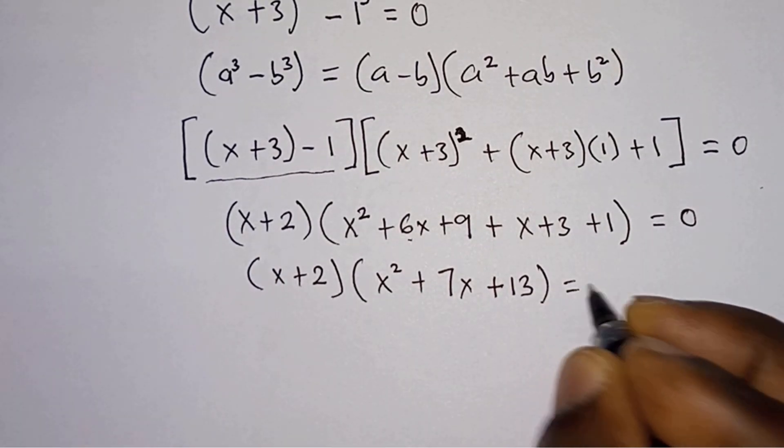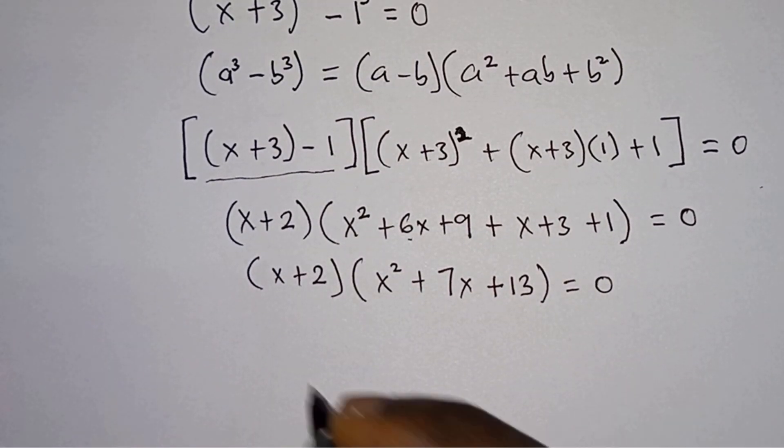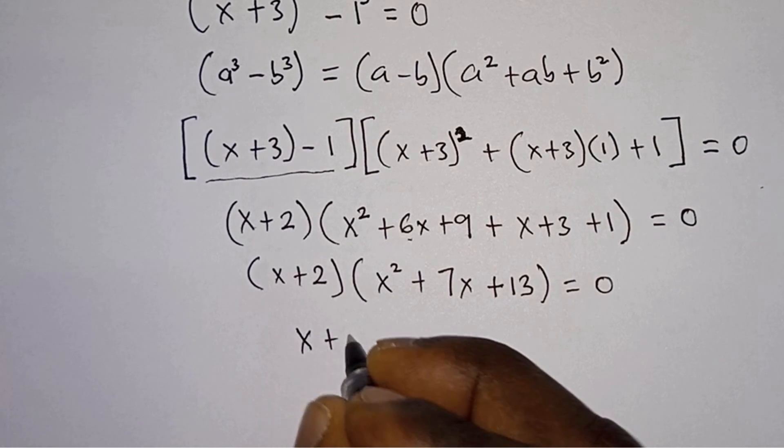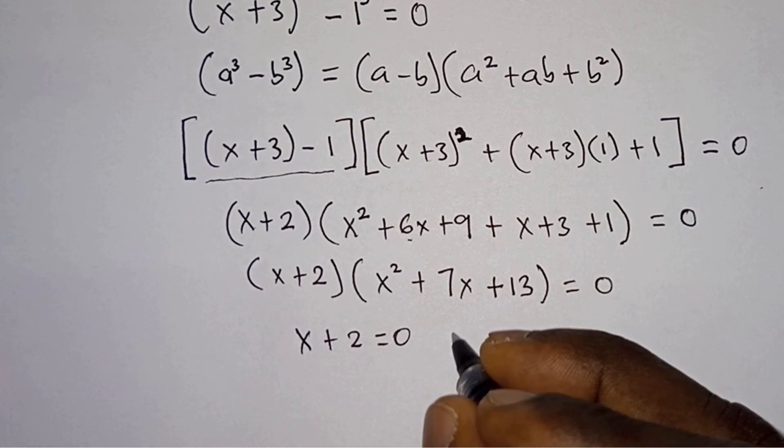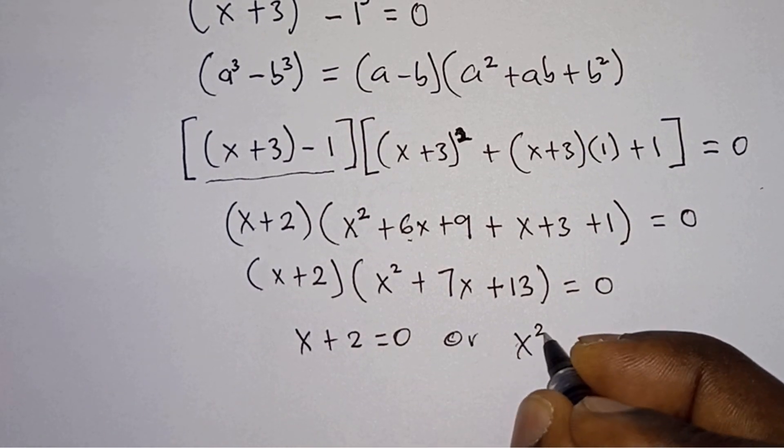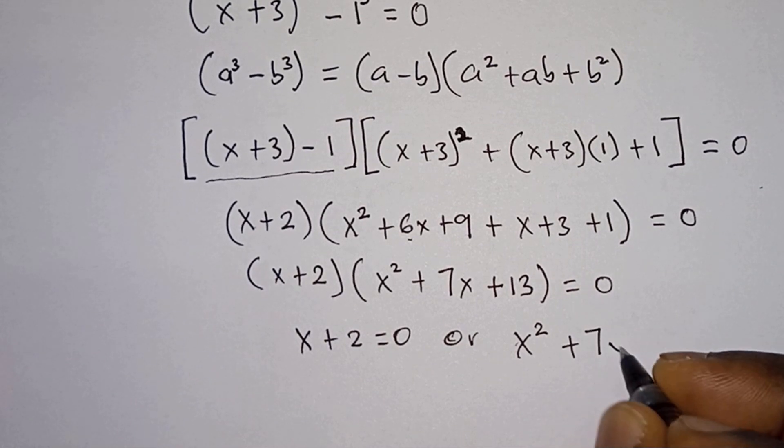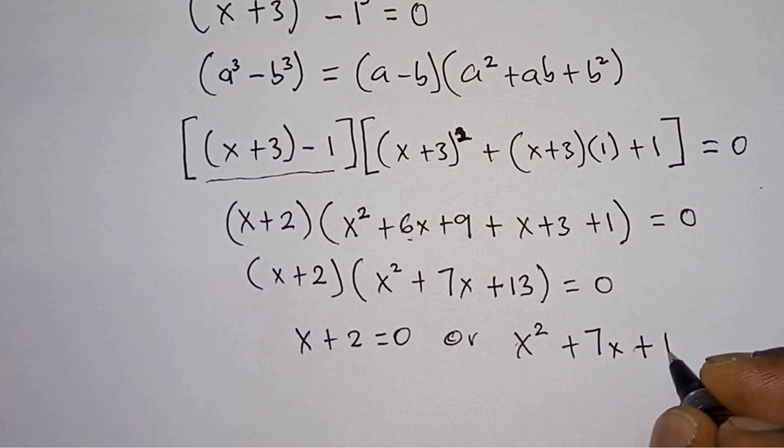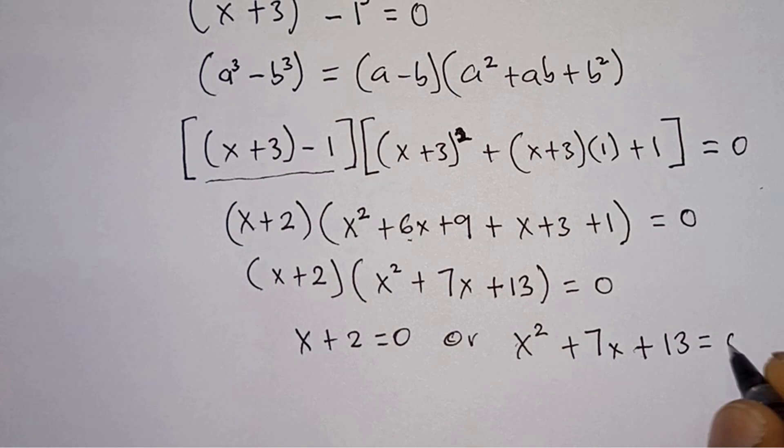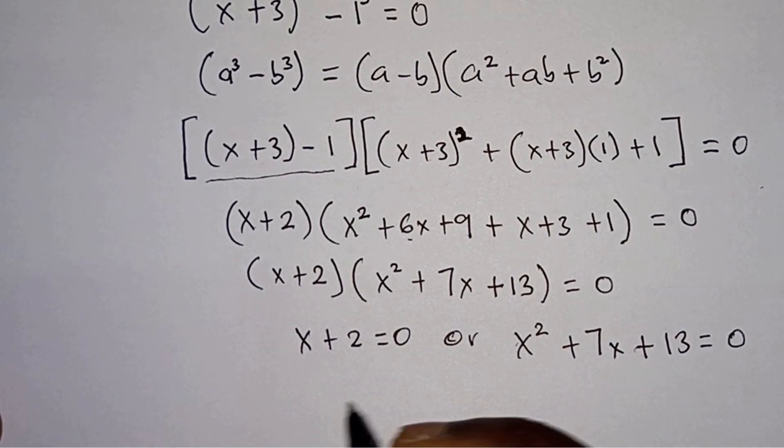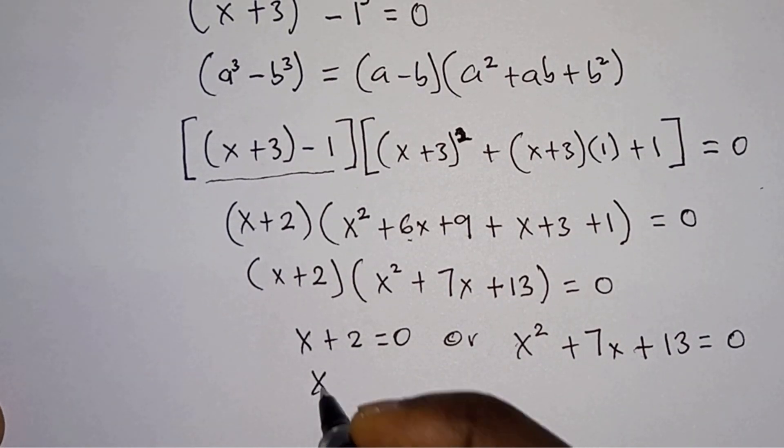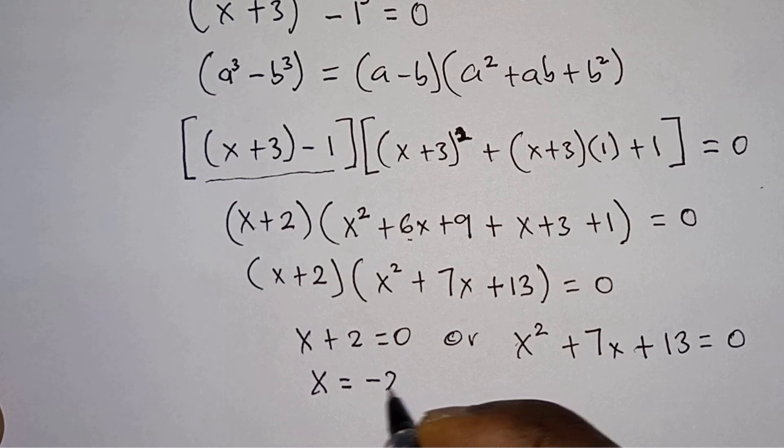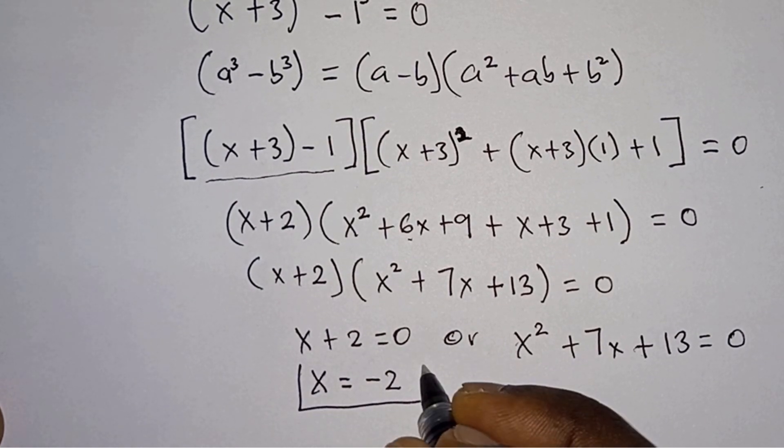At this point we can say that x plus 2 equals 0, or x² plus 7x plus 13 equals 0. And as we know, x from here is equal to negative 2. We know this to be a real solution already.